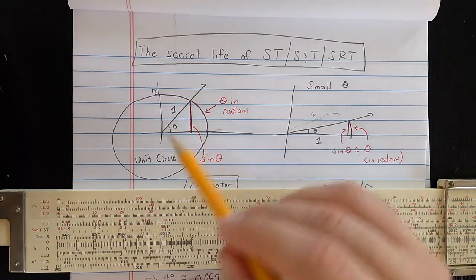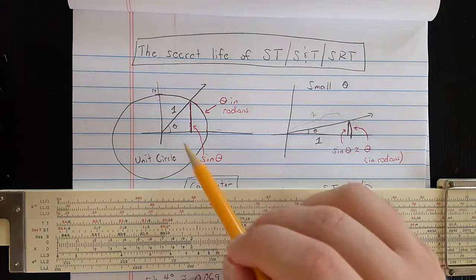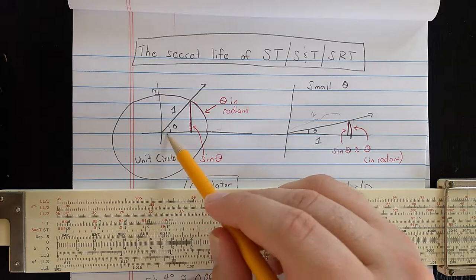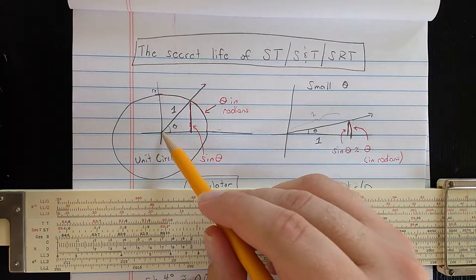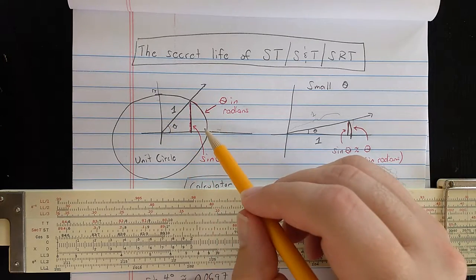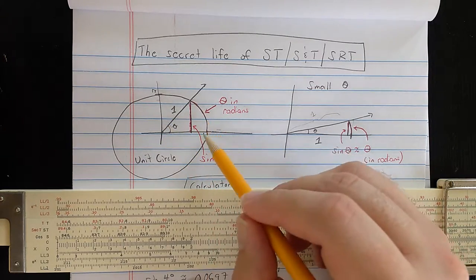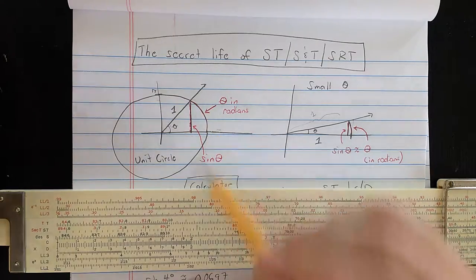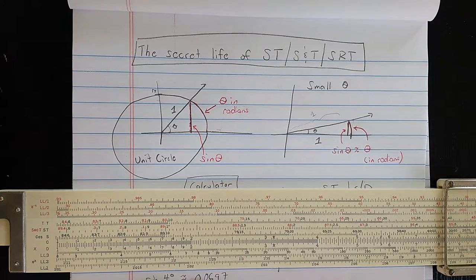How do you do the radian measure of angle theta? One way to compute the radian measure of angle theta is you put a unit circle with center at the vertex of angle theta, and then you see this arc, which is cut by angle theta, and the length of that arc is the radian measure of angle theta.